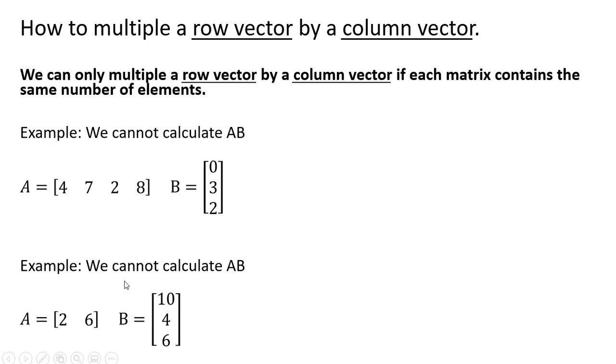Another example, matrix A has two elements. Matrix B, this column vector, has three elements, so the elements don't match. We cannot multiply matrix A times matrix B.